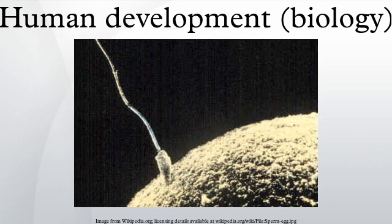The zygote contains a full complement of genetic material and develops into the embryo. Prior to implantation, the embryo remains in a protein shell, the zona pellucida, and undergoes a series of cell divisions. A week after fertilization, the embryo still has not grown in size, but hatches from its protein shell and adheres to the lining of the mother's uterus.